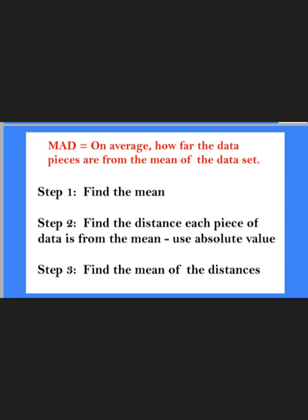So this talks about what MAD is. MAD, on average, is how far the data pieces are from the mean of the data set. So basically, how far away each piece of data is from the average of that data.